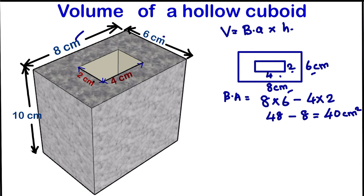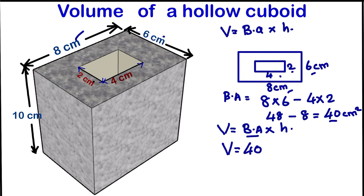So to calculate the volume, we said that volume equals the base area times the height. We know the base area is 40, so the volume will be 40 times the height. The height of this hollow cuboid is 10, so times 10. If we multiply it, we get 400 centimeters cubed. So that's the first method.